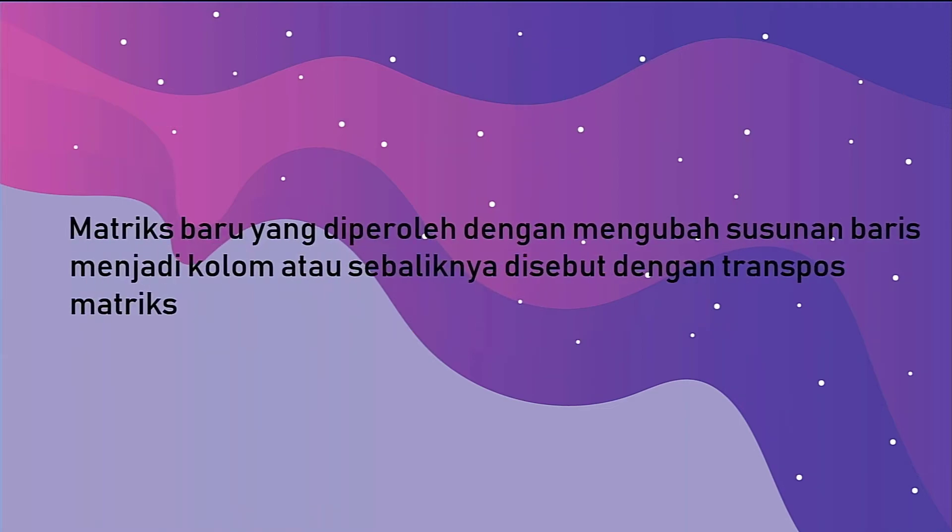Kalau kita hilangkan kepala judul dan kolom pertama, pada tabel sebelah kiri akan menjadi matriks dengan ordo 3 × 4. Sedangkan pada matriks sebelah kanan, berordo 4 × 3. Ketika ordonya berubah dari 3 × 4 menjadi 4 × 3 — artinya dari baris menjadi kolom dan kolom menjadi baris — itu yang disebut dengan transpose matriks. Jadi, transpose matriks adalah matriks baru yang diperoleh dengan mengubah susunan baris menjadi kolom atau sebaliknya.